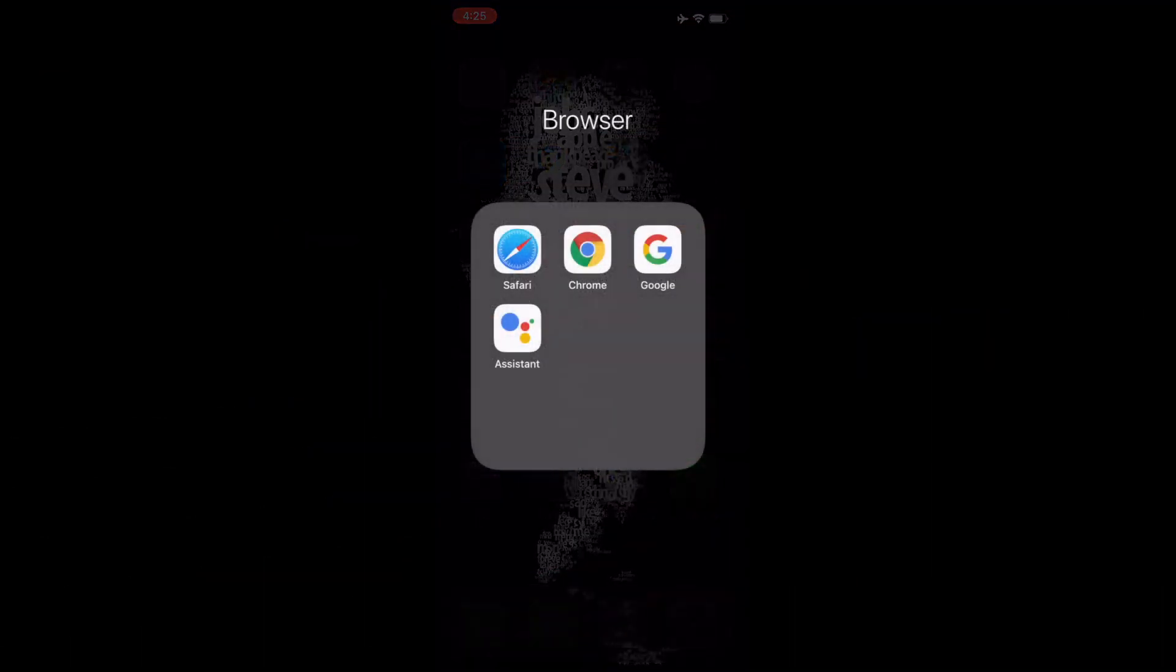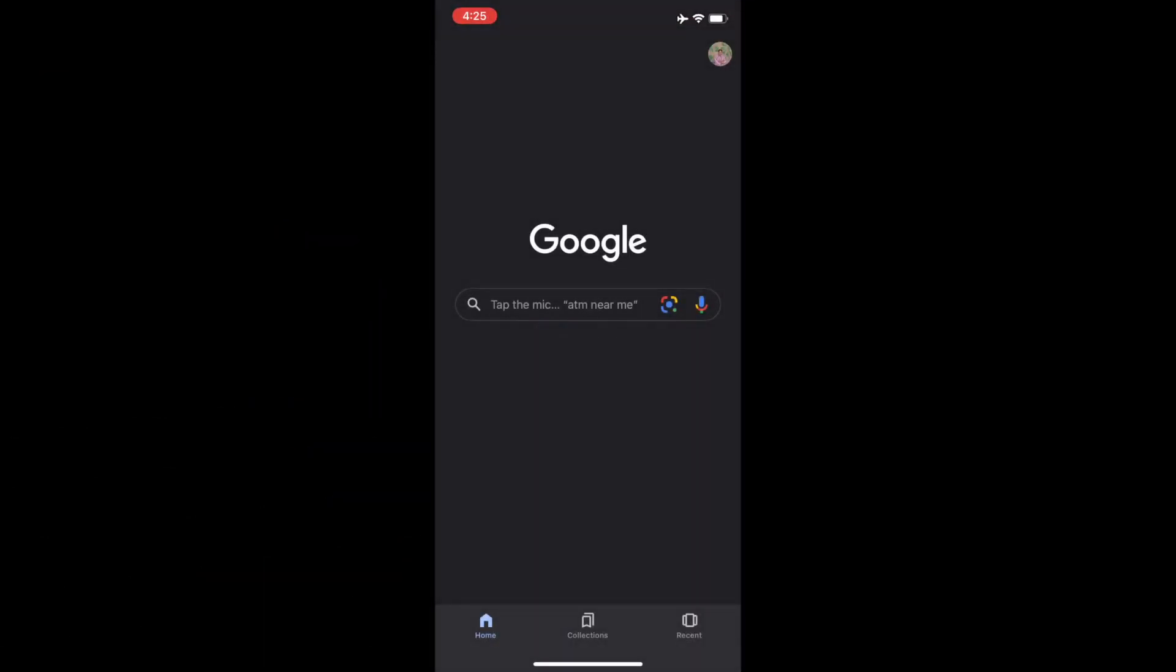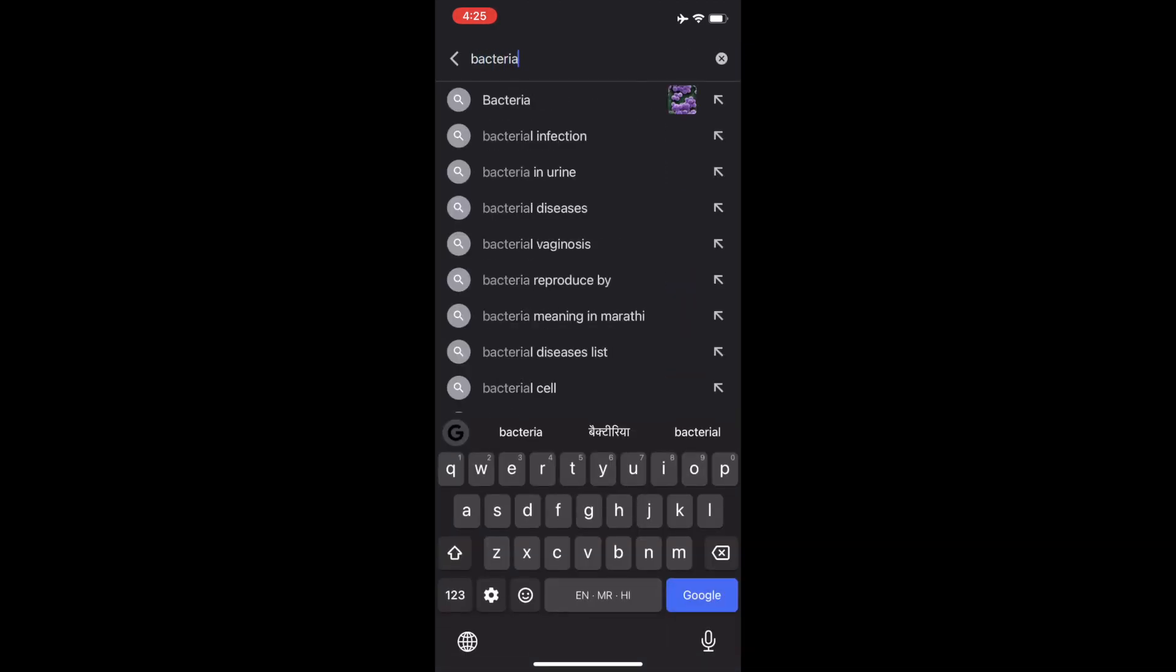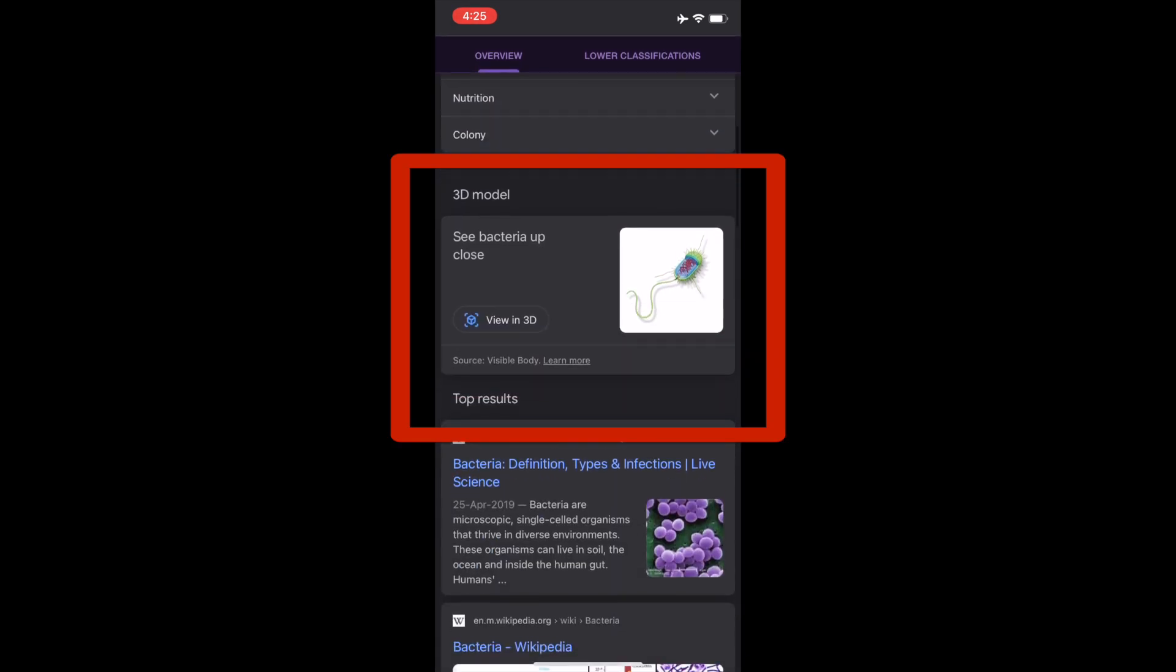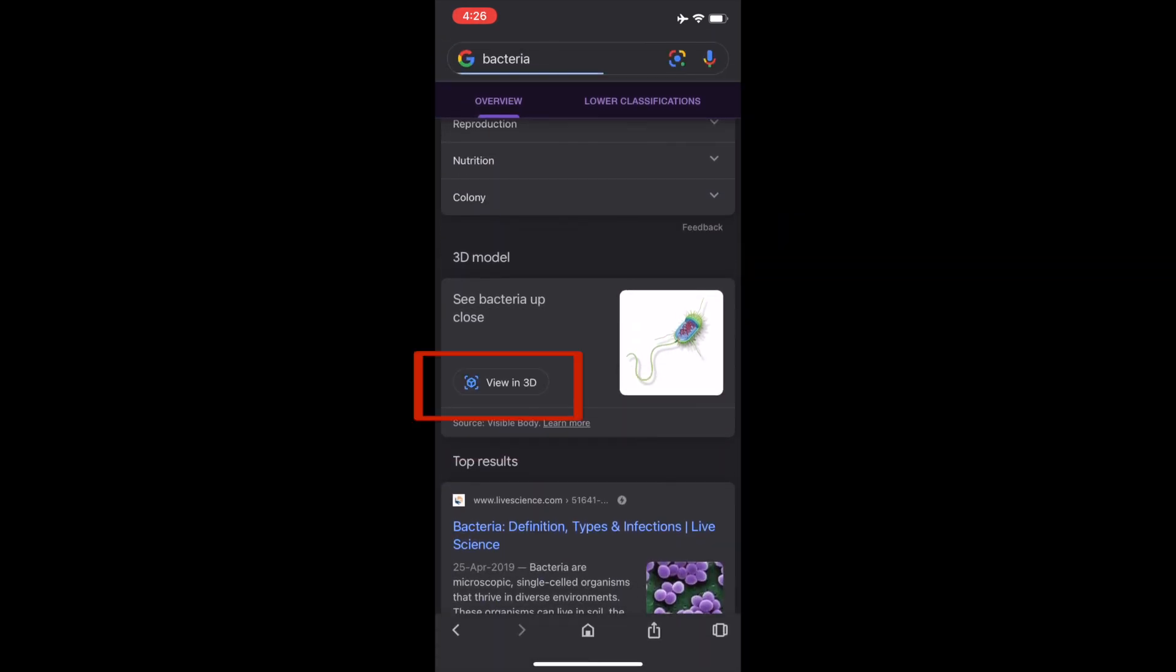So here I'm in the Google app. If you have not installed this app, then I would recommend you to install it from the play store or the app store. In the Google app, search bacteria and scroll and look for this one where it will be showing you the 3D model. Then click the button to view in 3D.